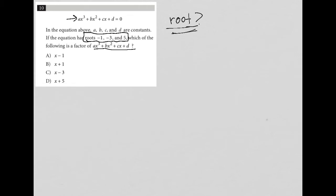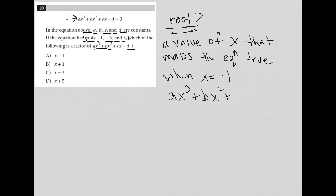So a root is a value of X that makes the equation true. So for instance, if we say a root is negative 1, that means when X equals negative 1, then this AX cubed plus BX squared plus CX plus D does in fact equal 0.